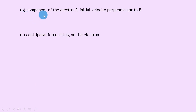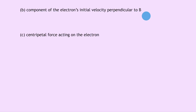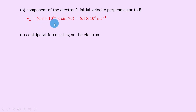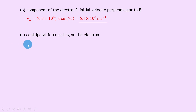Part b: calculate the perpendicular component of velocity. v perpendicular equals v sin theta = 6.8 times 10 to the 6 times sin 70 = 6.4 times 10 to the 6 meters per second.